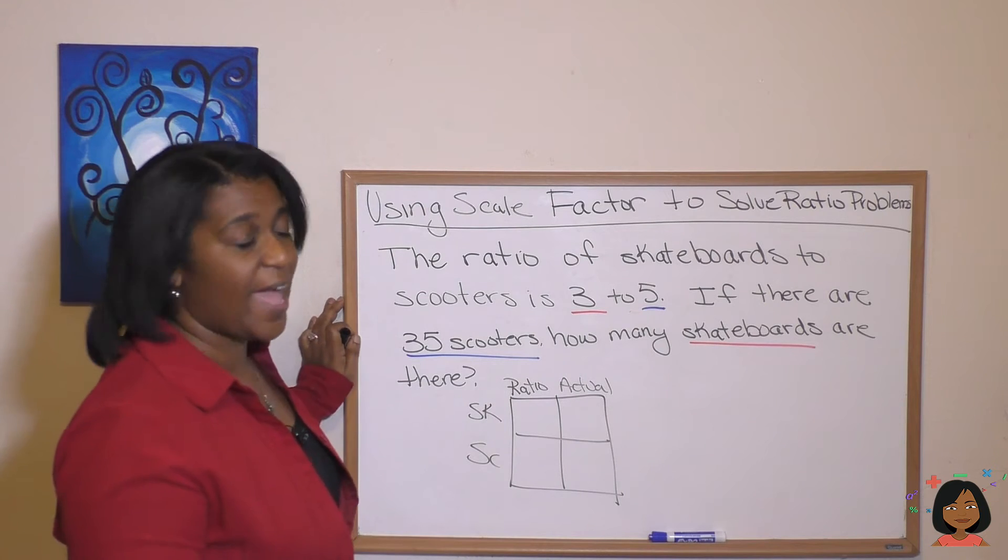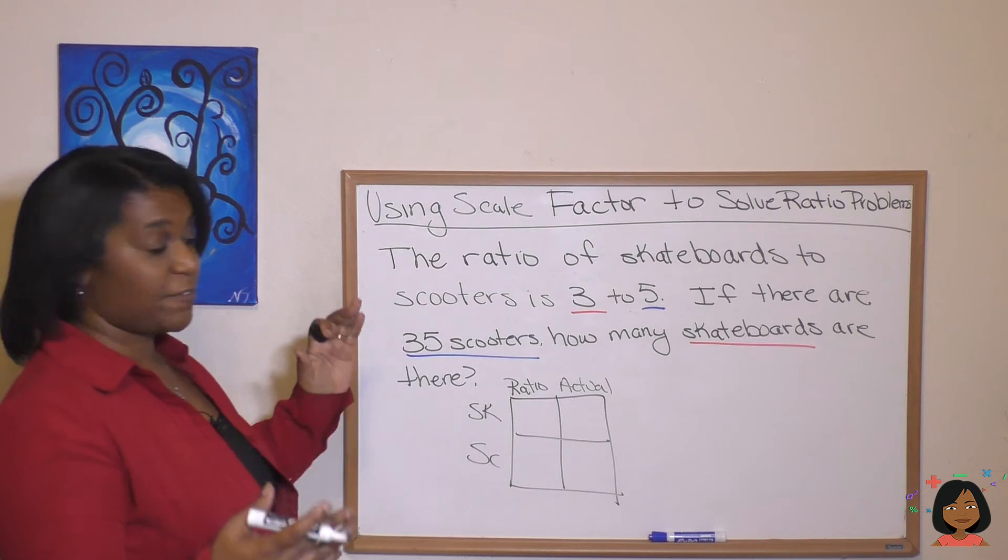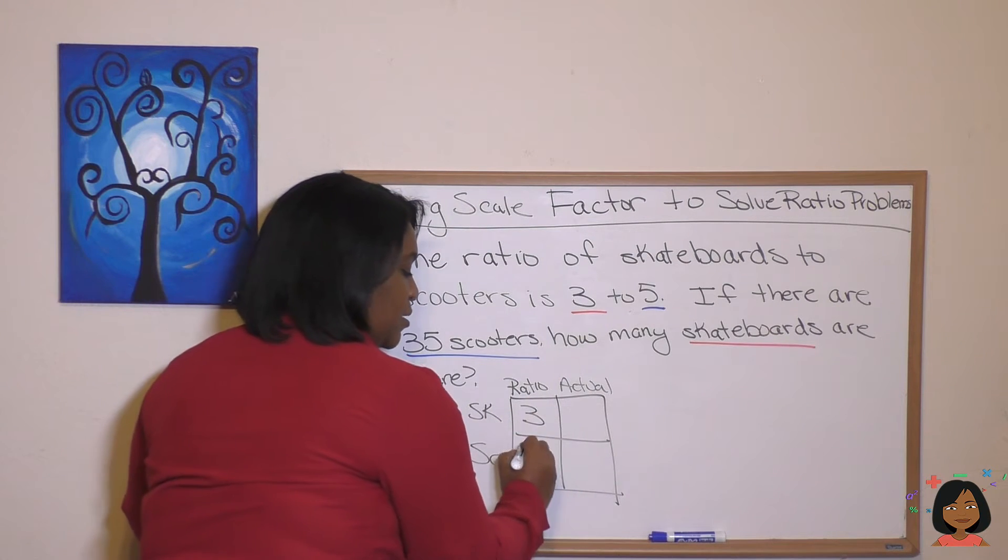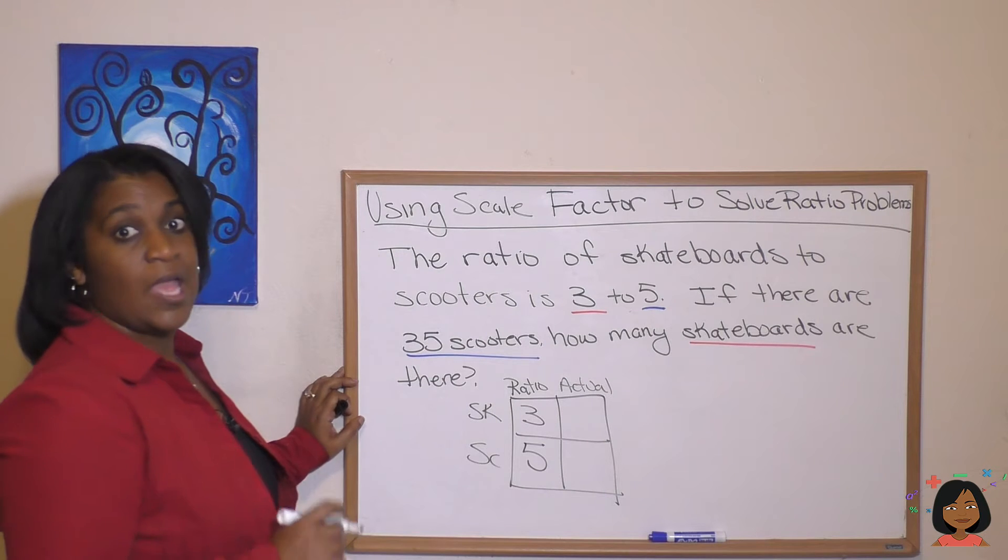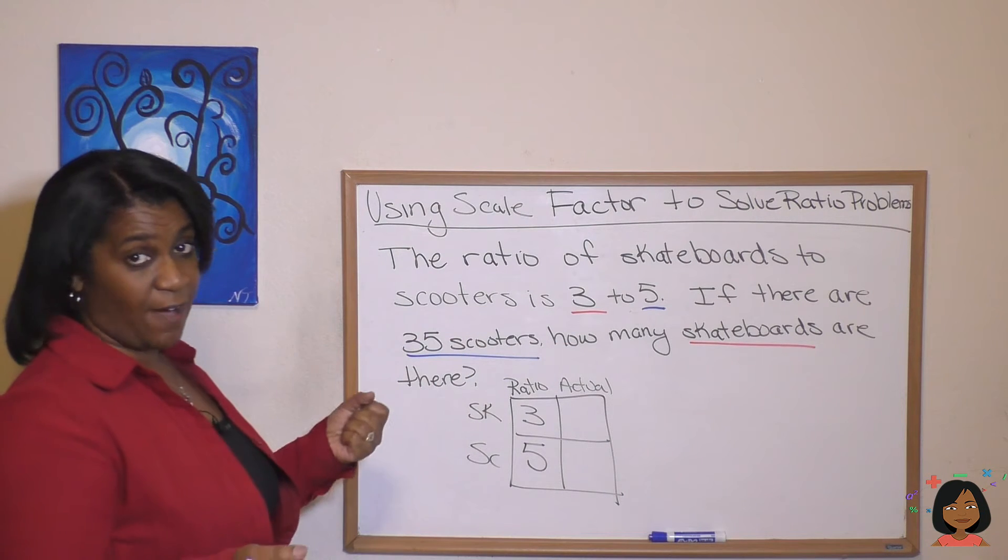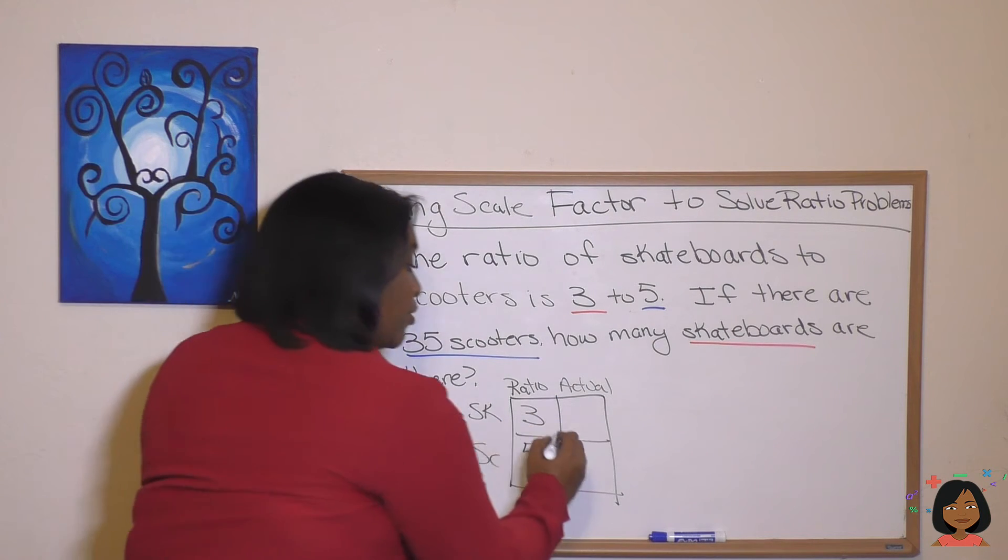Now let's fill it in with the numbers that we have. So the ratio of skateboards to scooters is three to five. So we want to put in under the ratio column three to five. Now under the actual, what do we have? It says if there are 35 scooters, so let's go find scooters and actual and put in 35.